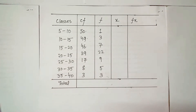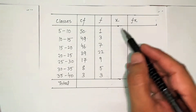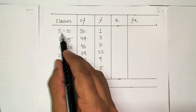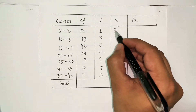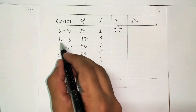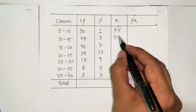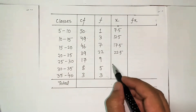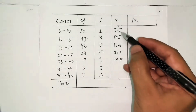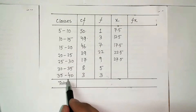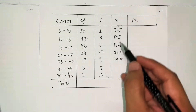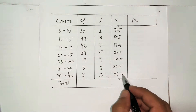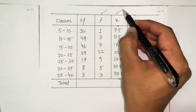Now things are easing out and we can see the pattern as used in arithmetic mean. I will calculate the midpoint x, where midpoint = (lower class limit + upper class limit) / 2. So: (5+10)/2 = 7.5, (10+15)/2 = 12.5, then 17.5, 22.5, 27.5, 32.5, and 37.5. Notice the midpoints also increase by the same class width of 5 throughout.